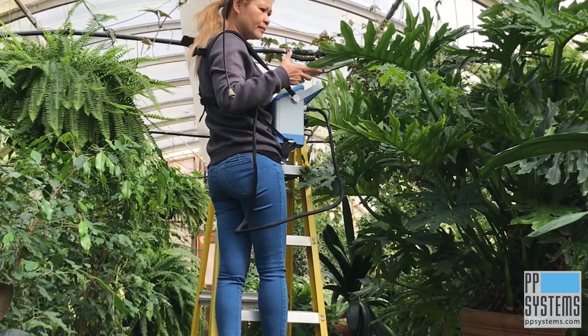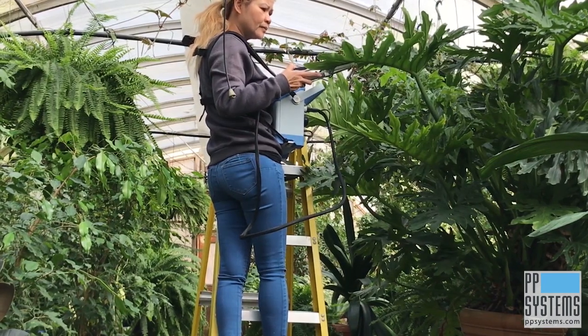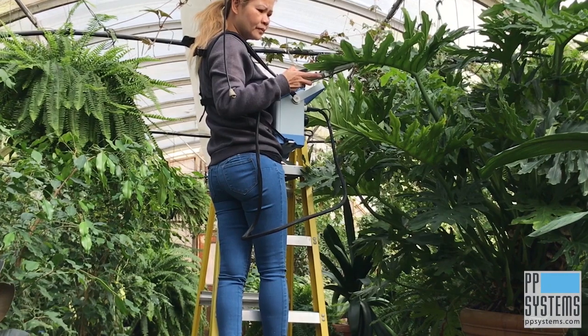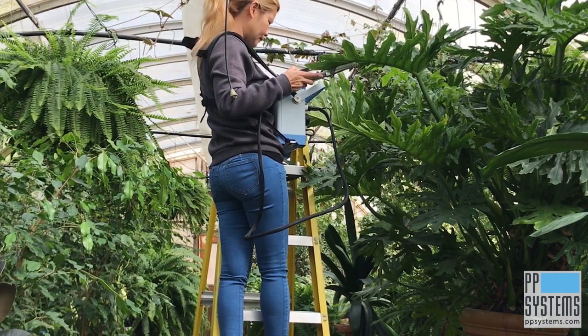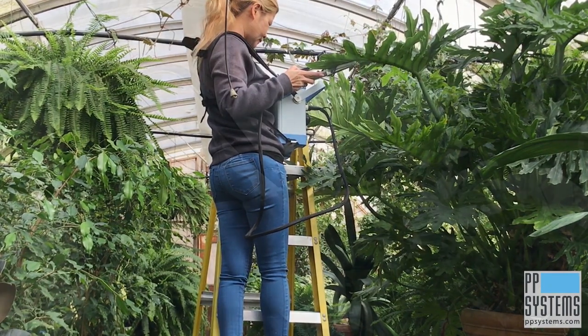When it comes to field research, size and weight matter, and at just over 4.5 kilograms for the console and under 1 kilogram for the cuvette, the Cyrus 3 is the most portable photosynthesis system of its kind.